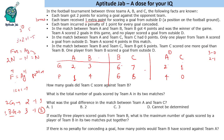Now we can answer the questions. How many goals did team C score against team B? Team C scored seven goals against team B. What is the total number of goals scored by team A in its two matches? Team A scored two goals against B and two goals against C — a total of four goals. The goal difference in the match between A and C was one goal.